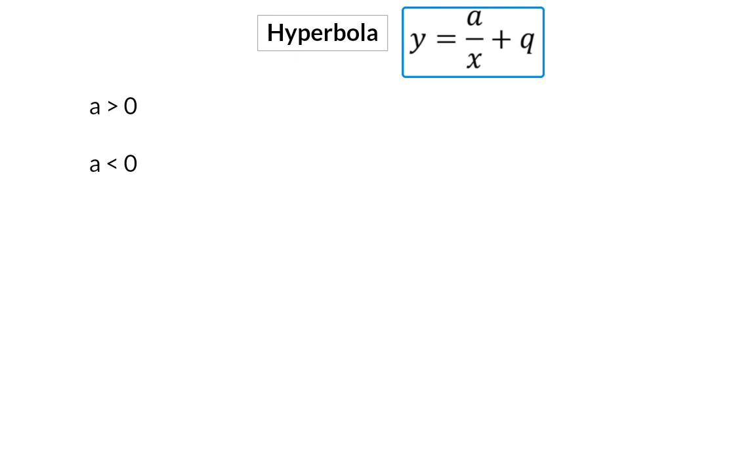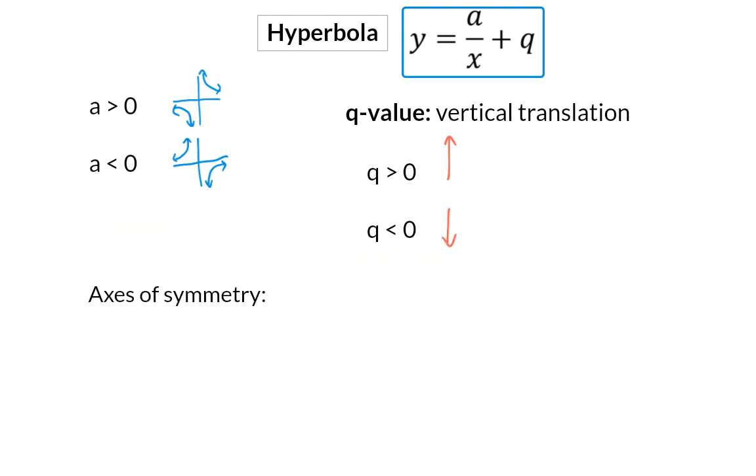In the equation of the hyperbola, the a-value shows us whether we will be working in the 1st and 3rd or 2nd and 4th quadrants. The q-value moves the graph vertically up or down. Here we have two axes of symmetry, and both of them are influenced by the q-value. A hyperbola also has two asymptotes, of which only the horizontal asymptote is influenced by the q-value.